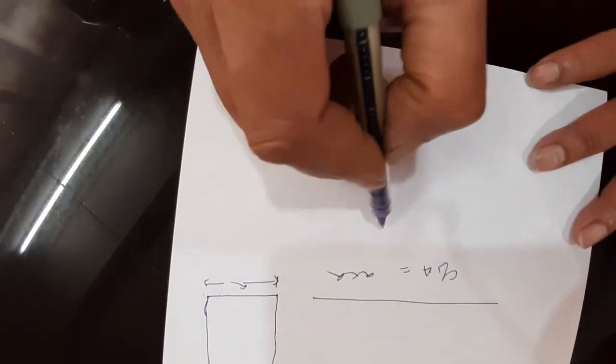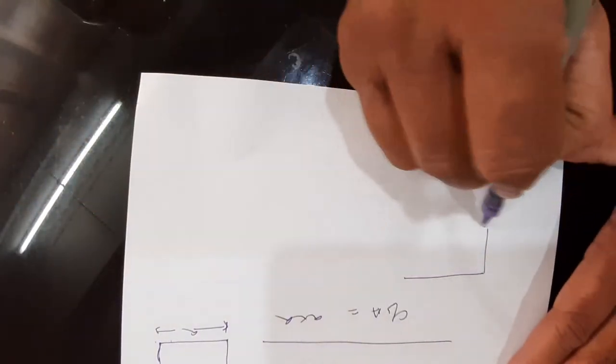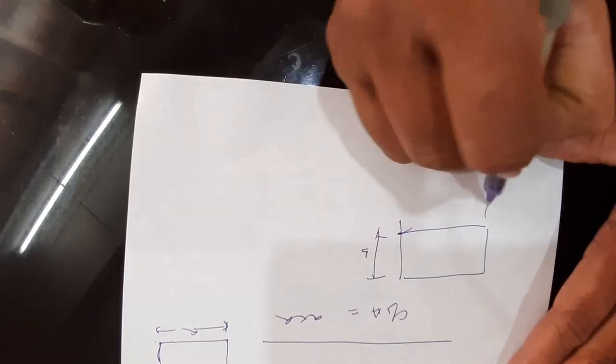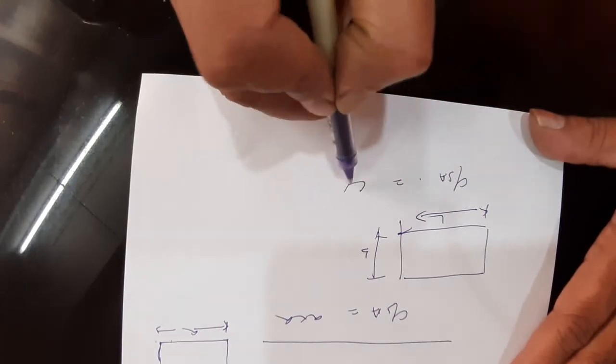And suppose the cross sectional area is a rectangle. This will be the breadth and this will be the length. Therefore cross sectional area is equal to l × b.